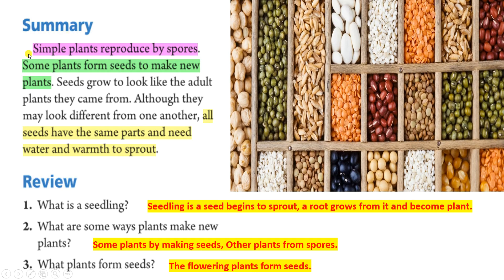Summary. Simple plants reproduce by spores. Some plants form seeds to make new plants. Seeds grow to look like the adult plants they came from. Although they may look different from one another, all seeds have the same parts and need water and warmth to sprout.